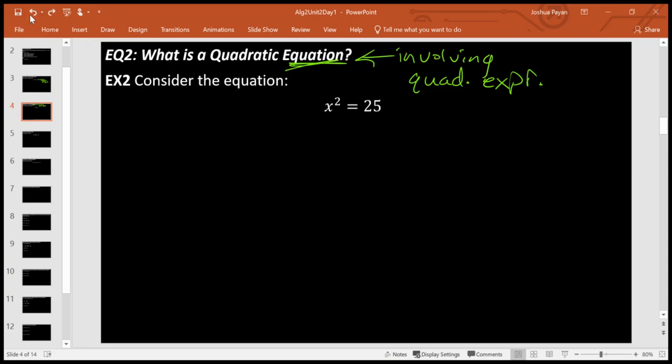And the interesting thing about quadratics comes from what I call the duality of squares. So I have x squared equals 25. If I was going to solve this equation, well, I need to do the inverse of squaring x, which is to take the square root of x, and what I do to one side I do to the other. So I have x equals... Well, what's the square root of 25?